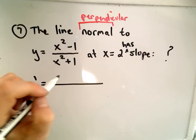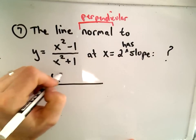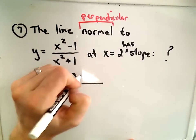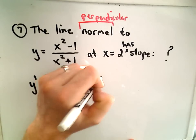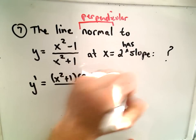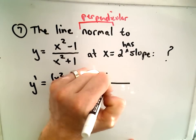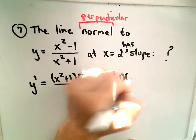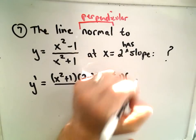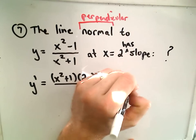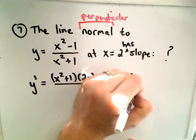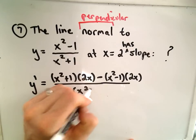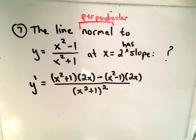The derivative says we get the bottom times the derivative of the top, minus the top times the derivative of the bottom — which will be 2x — all over the bottom part, all squared.